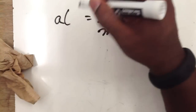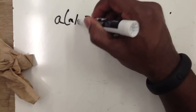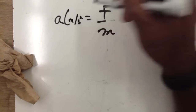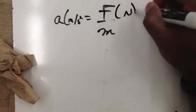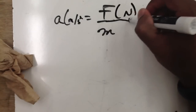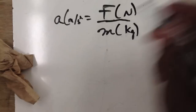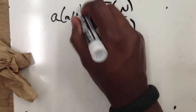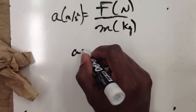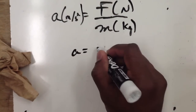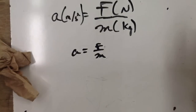Remember that our units for acceleration are meters per second squared, for force it's newtons, and for mass it's going to be in kilograms. So acceleration is equal to force divided by the mass.